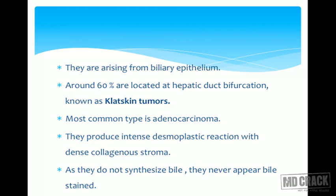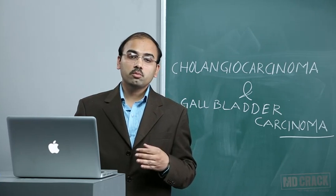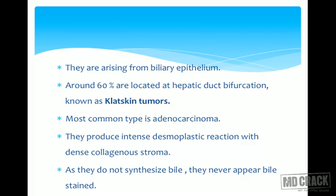Cholangiocarcinomas arise from biliary epithelium. Around 60% are located at the hepatic duct bifurcation, known as Klatskin tumors — most commonly located at the biliary confluence. The most common histological type is adenocarcinoma. They produce an intense desmoplastic reaction with dense collagenous stroma.